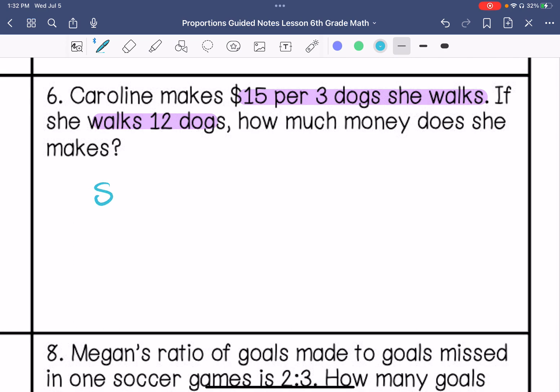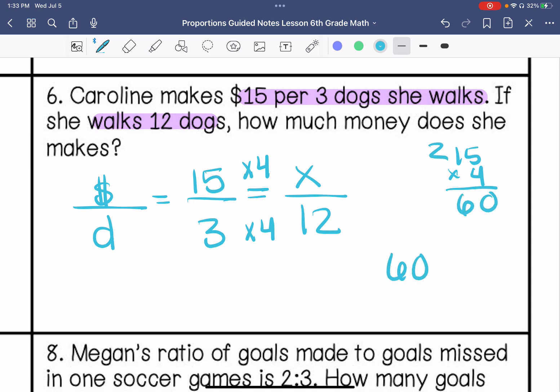So we have how much money and then how many dogs she walks. So she makes $15 per 3 dogs she walks. If she walks 12 dogs, how much money does she make? So 3 times 4 is 12. So 15 times 4 is going to be what? She's going to make $60.